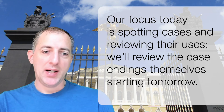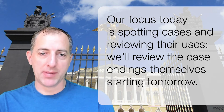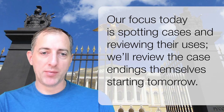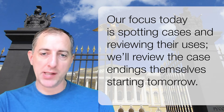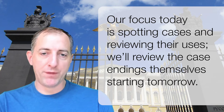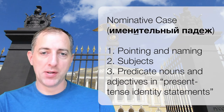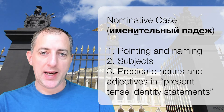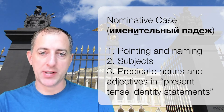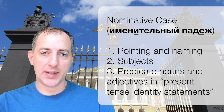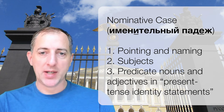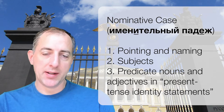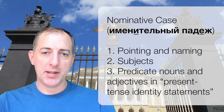Let's start by talking about the case system — not so much the endings, we'll save that for later, but what the cases are and the basic roles they play. First, the nominative. The nominative is used for naming stuff basically, and it's used for subjects of Russian sentences. We're simply pointing at something and naming it, like книга — we're not doing anything to it, just naming it. A Russian subject is always going to be in the nominative.